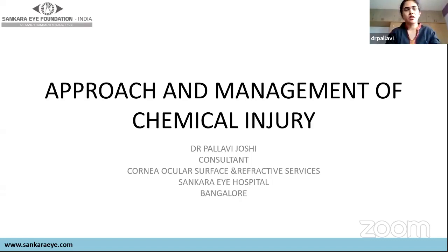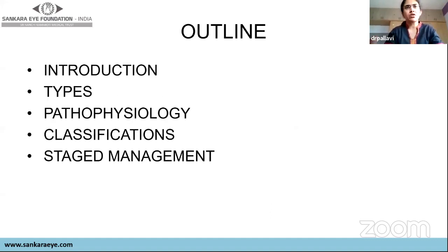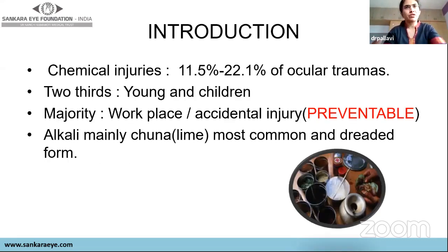Thank you, sir. Good afternoon, everybody. We will be speaking on the Approach and Management of Chemical Injury today. The outline of the talk is introduction, types of injuries, pathophysiology, classification of chemical injury, and staged management. Chemical injuries account for nearly 22% of ocular traumas, and two-thirds occur in young adults and children — the economically productive group. Majority are preventable as they occur either at the workplace or accidentally. Lime is the most common alkali injury, which is a dreaded form in our country.